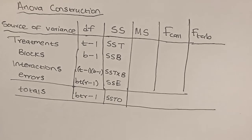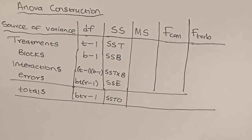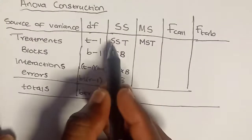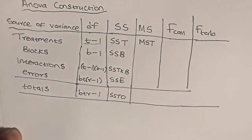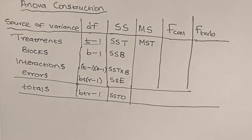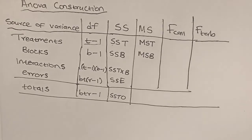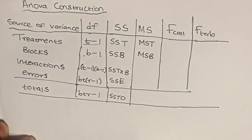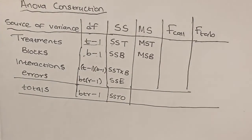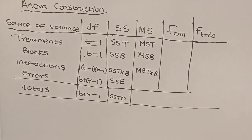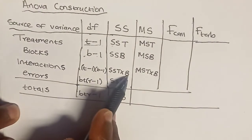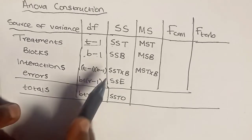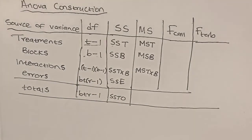Moving to mean sum of squares: the mean sum of squares of treatment is given by the sum of squares of treatment divided by the degrees of freedom of treatment. We also have the mean sum of squares of blocks given by the sum of squares of blocks divided by the degrees of freedom of blocks. We also have the mean sum of squares of interactions given by the sum of squares of interactions divided by the degrees of freedom of interactions. Most importantly, we have the mean sum of squares of error.